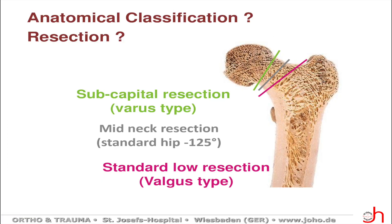What about the anatomical situation? If we focus on the femoral neck — and we do have to focus on the femoral neck if we talk about short stems — we can perform different types of resections: a very proximal resection, subcapital; a very low distal resection; or a resection between these two types, the so-called partial neck preserving or partial neck resection.